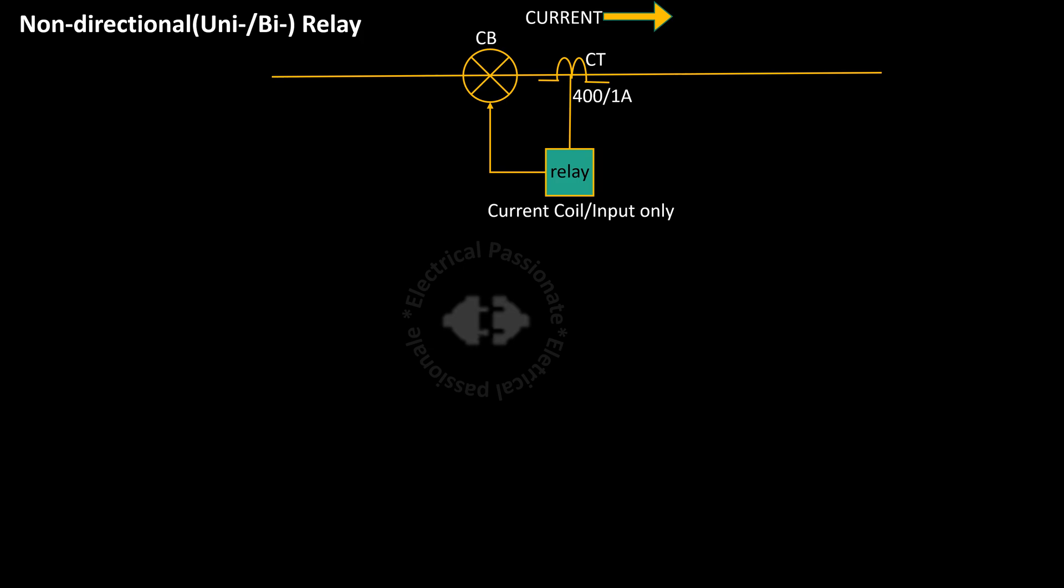The CT experiences the excessive flow of current beyond its setting and the CT commands the relay to issue a trip of the circuit breaker. Circuit breaker trips. For non-directional relay, the occurrence of such incidents is same for both directions.